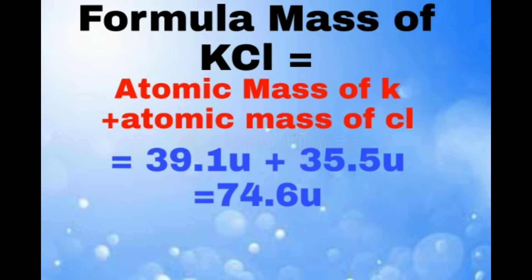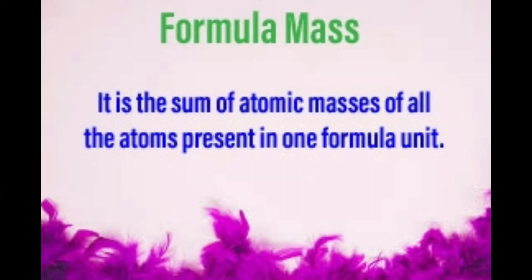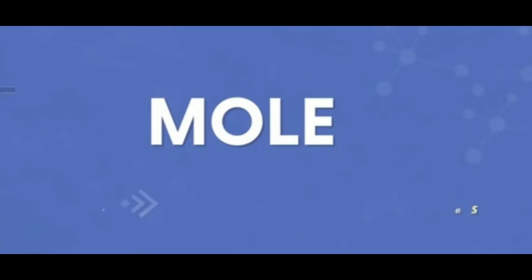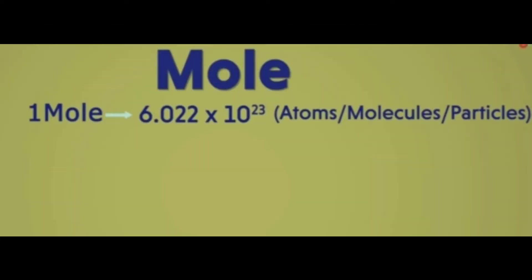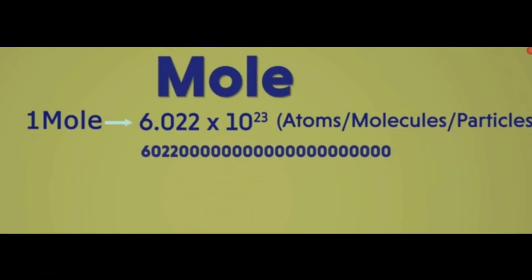From these points, we can identify that in the case of ionic compounds, instead of using molecular mass, we use formula mass — it is the sum of atomic masses of all the atoms present in one formula unit. Next, our topic is mole concept. Can you define one mole of a substance?